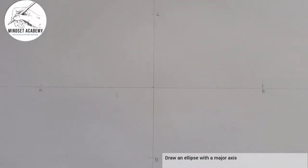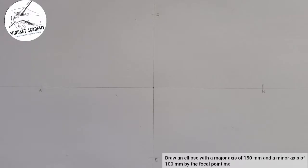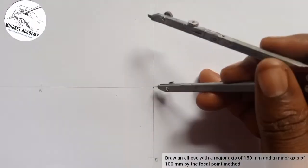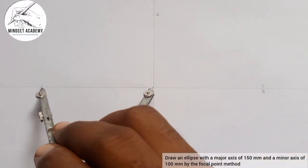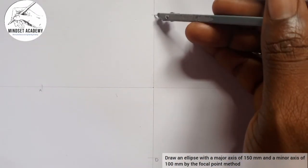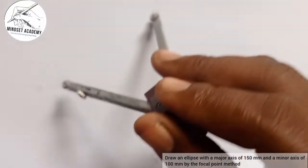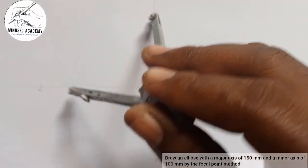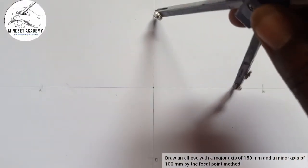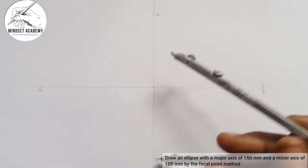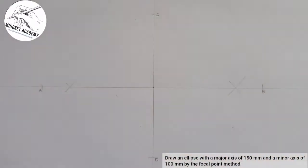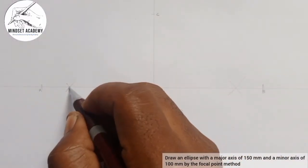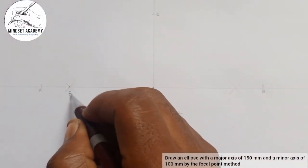The next thing is to get my focal points. I'm going to place the compass at the center, set it to point C, and strike arcs along the major axis — one line this way and another line this way, and also from D. The points where they intersect I'll call F1 and F2.